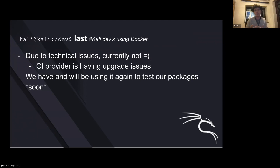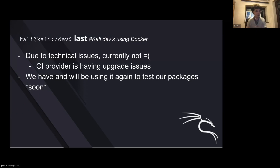As soon as it's back in production, we are going to be using it again to test our packages. When you do a commit to the package repo, it will pull down from the master or main branch, try to compile and build it in a Kali environment. If it works, fantastic. If it doesn't, we get the errors. We try to get as close to a Kali experience as possible outside of the local environment. This is the first stage in the package building process, which happens remotely.